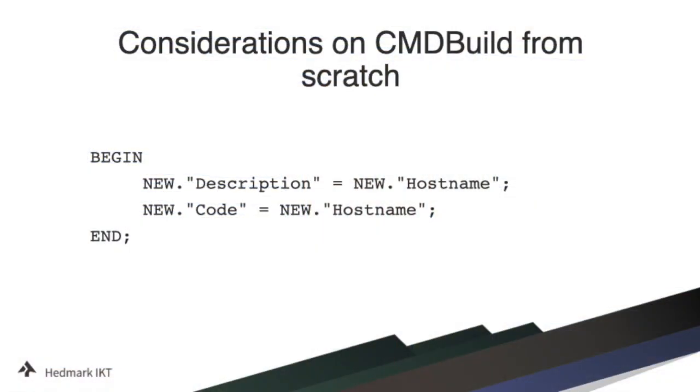You should probably consider making the application more usable before you expand the model. On the next slide I have an example of a function and trigger we use to copy the unique attributes automatically to the required attributes — code and description. We have hidden the code and description fields in the application to simplify it and make it a little more user-friendly for some of our non-technical staff.